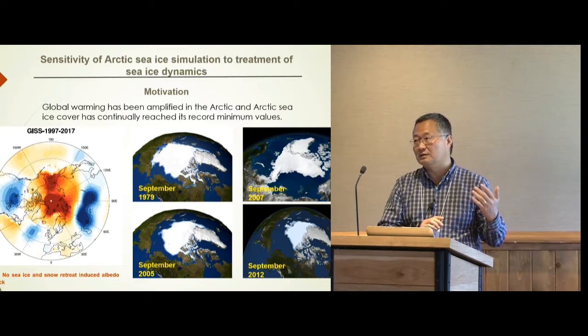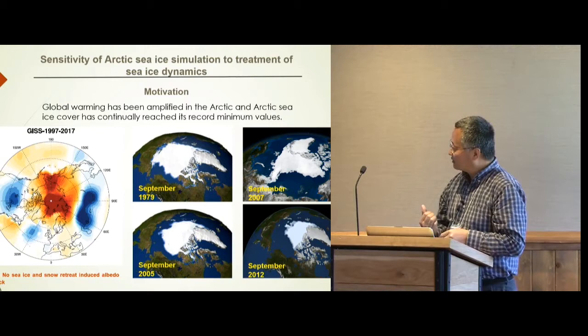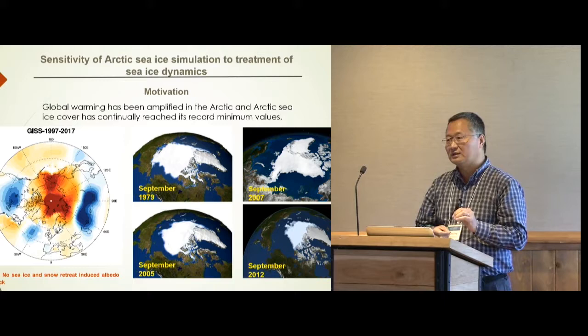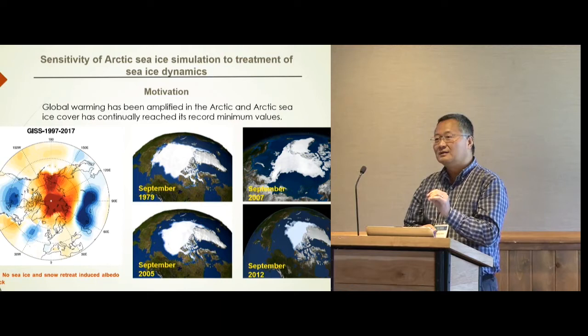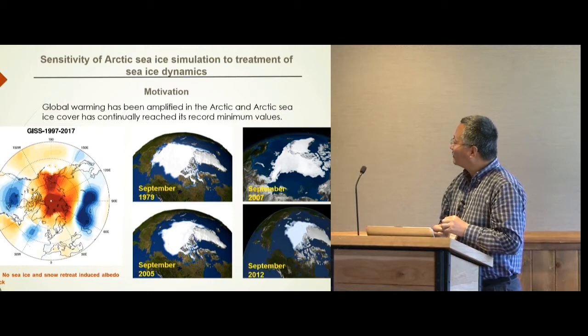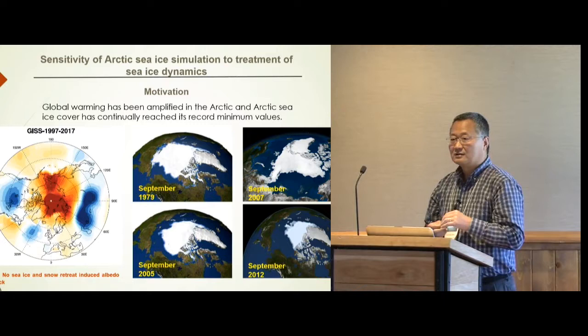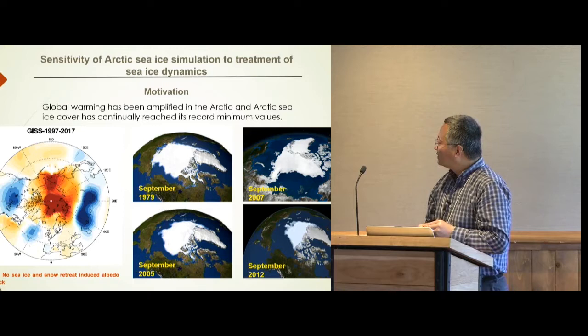There are two phenomena to highlight. First is Arctic amplification: the temperature increase in the Arctic has occurred at a rate six to seven times faster than the global average in recent years. Second, during the most recent decades, sea ice (CIS) coverage has continually reached record minimum values. The CIS is generally considered an indicator of global climate change.